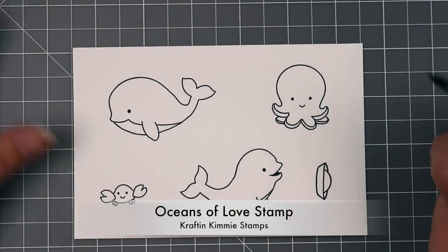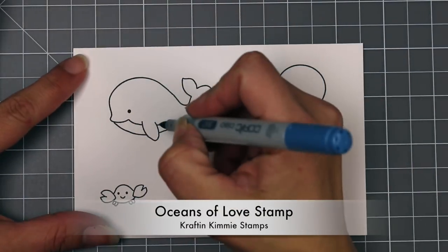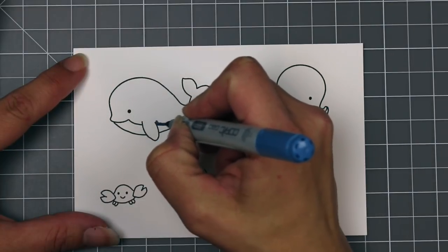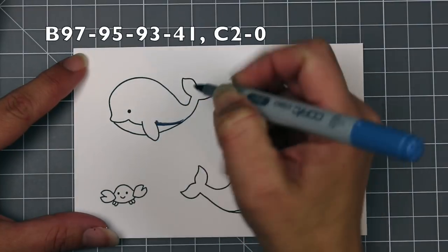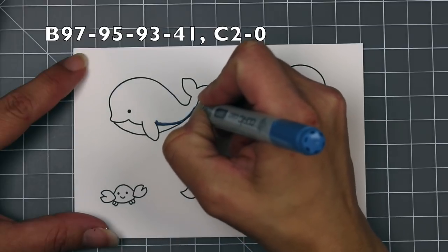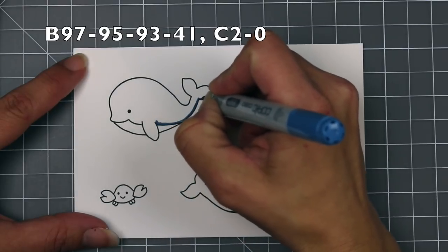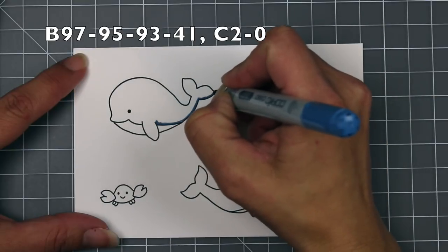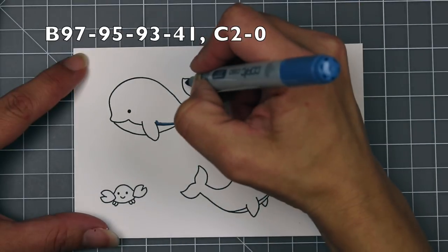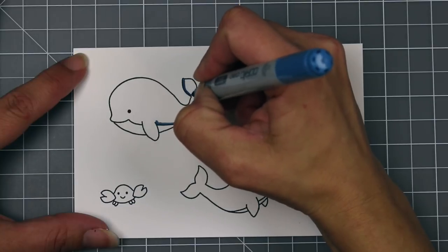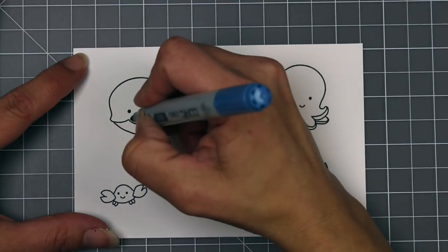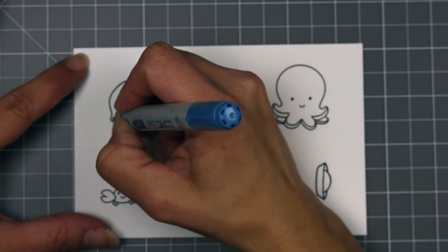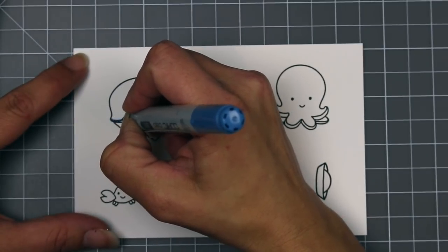Now that my backgrounds are complete, I'm going to move on to the Copic coloring of my images. For this one, I'm going to be using Oceans of Love. And this is from Crafting Kimmy Stamps. I believe at the time of this video right now, it is unavailable. But if you click on the notify me button, you will be notified when it is back in stock. Another good option if you want to create an ocean scene is you can also use the stamp set Keep Swimming. That has some really cute critters on it and some snorkeling kids.